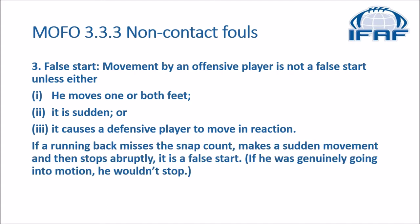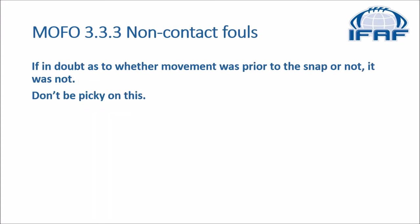If a running back misses the snap count, makes a sudden movement, and then stops abruptly, it is a false start. If he was generally going into motion, he wouldn't stop. And finally, if in doubt as to whether movement was prior to the snap or not, it was not — don't be picky on this. Now let's have a look at some game film.